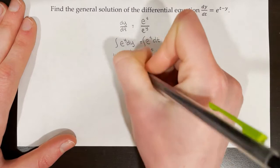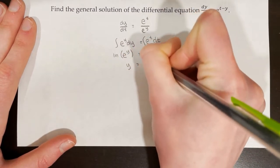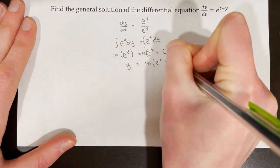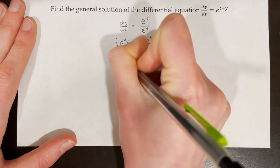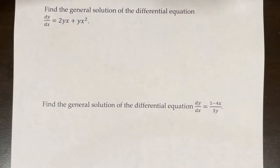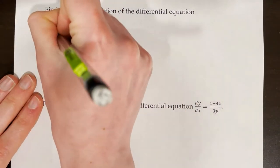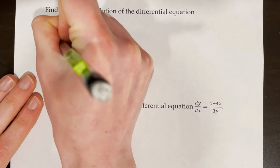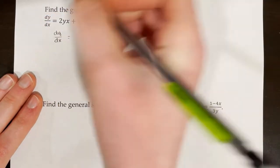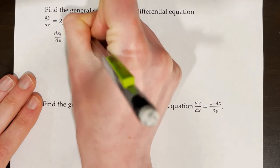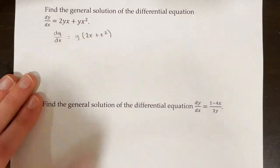Find the general solution of dy/dx = 2yx + yx². In this case, we need to factor out something to get two equations — one in terms of x and one in terms of y — multiplied by each other. So we rewrite dy/dx by factoring out a y: dy/dx = y·(2x + x²).